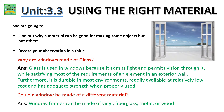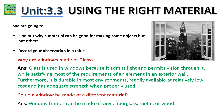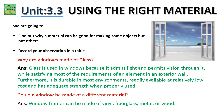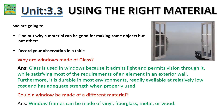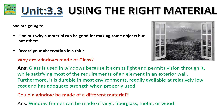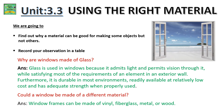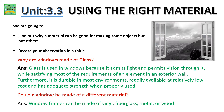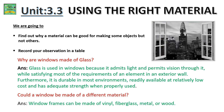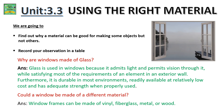Why are windows made of glass? Glass is used in windows because it admits light and permits vision through it, while satisfying most of the requirements of an element in an exterior wall. Furthermore, it is durable in most environments, readily available at relatively low cost, and has adequate strength when properly used.